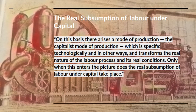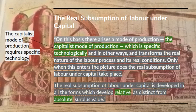The real subsumption of labour to capital, he says, arises when a mode of production — the capitalist mode of production — emerges that is specific technologically and in other ways, and transforms the real nature of the labour process and its real conditions. Only when this enters the picture does the real subsumption of labour under capital take place. The real subsumption of labour under capital is developed in all the forms which develop relative as distinct from absolute surplus value.